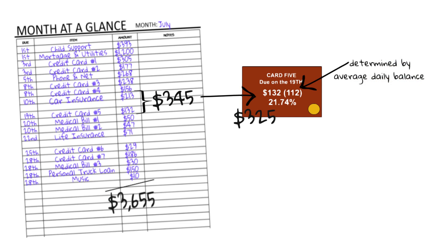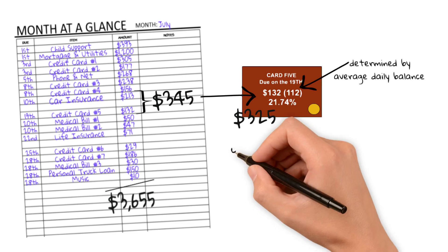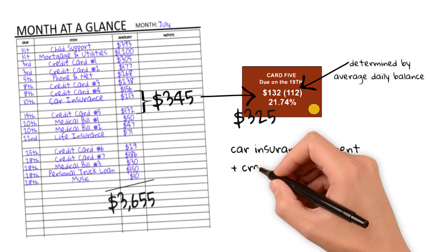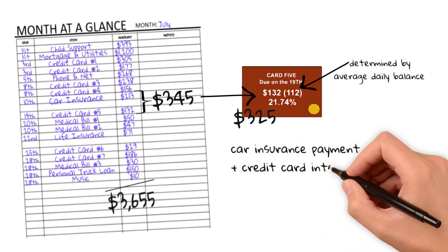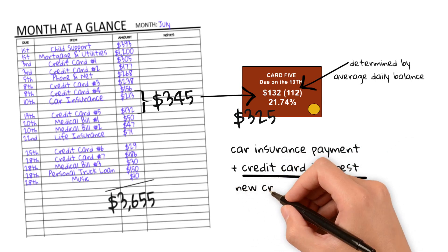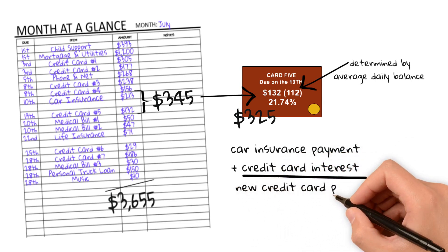I don't want that $213 to sit there. So I'm going to call up the credit card company. And instead of making the payment for $132, I'm going to make it for $325, which covers the car insurance and it covers the interest on that card.